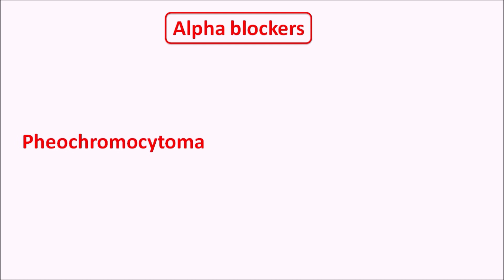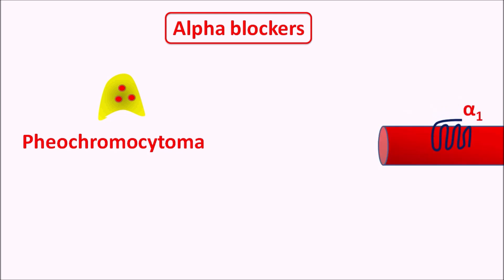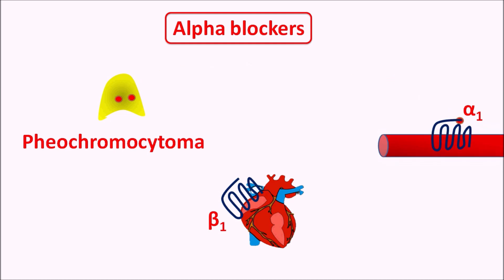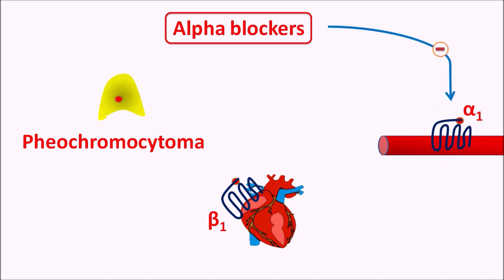In conditions like pheochromocytoma, a catecholamine-producing adrenal tumor, when this tumor is surgically removed it can release catecholamines which act on alpha 1 receptors on vascular smooth muscle, producing vasoconstriction and systemic hypertension, or on beta 1 receptors on cardiac muscle, increasing the rate of contraction. That's why in surgical removal of pheochromocytoma, alpha 1 blockers are used to block stimulation of alpha 1 receptors, and beta blockers are used to block actions on cardiac muscle.